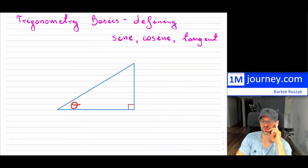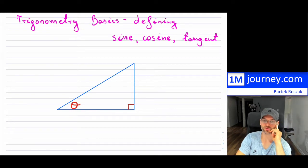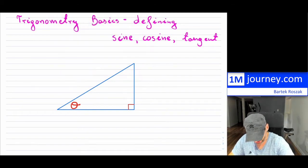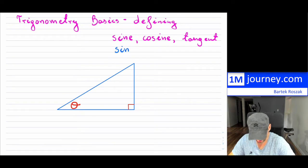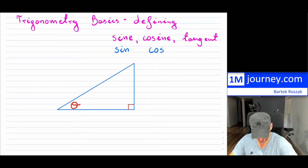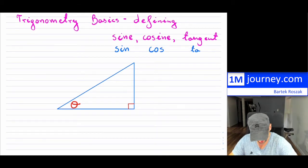Once you have these right-angle triangles, we have, just for convenience, come up with these definitions of sine, cosine, and tangent. And just for shorthand, instead of writing sine, we typically will write S-I-N — so it's not 'sin,' it's 'sine.' For cosine, we typically just write C-O-S. And then for tangent, we just simply write TAN.